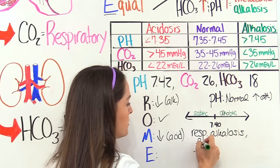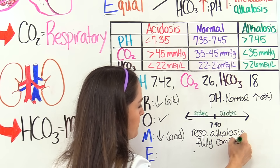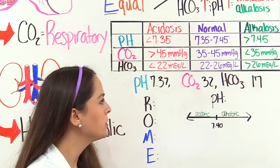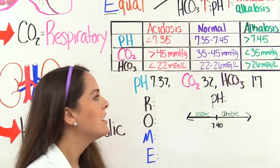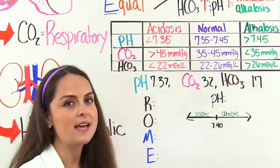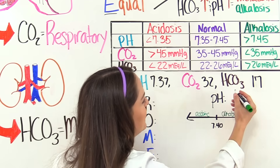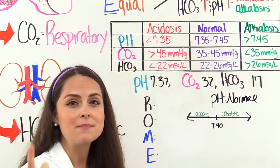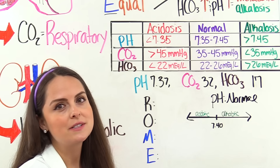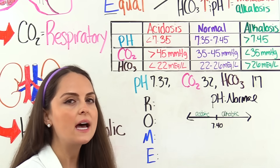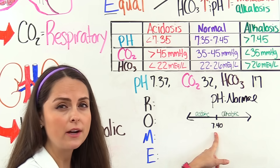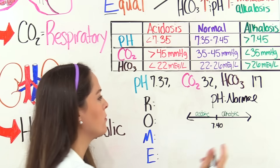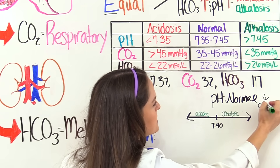We already know the answer to our third question: we have full compensation because blood pH is normal. Our body has thrown the metabolic system out of normal levels to help balance that blood pH back to normal. So we have respiratory alkalosis, fully compensated. The next problem: blood pH is 7.37, carbon dioxide level is 32, and bicarb is 17. Normal level is 7.35 to 7.45. We're at 7.37, so we're normal. Again, you're thinking full compensation, but we have to figure out the other two questions. The absolute normal is 7.40, and 7.37 is lower than that — so we're on the acidotic side of normal.